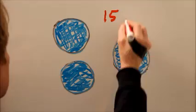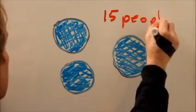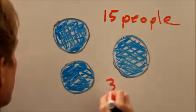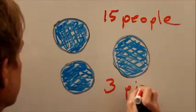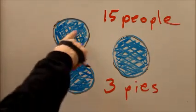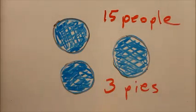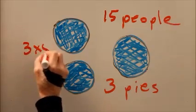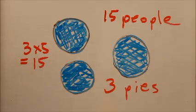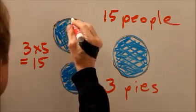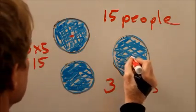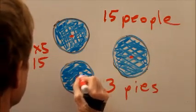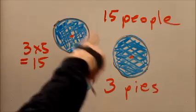people, we got three pies. If we cut each pie up into five identical pieces, then we're going to have a total of 3 times 5 equals 15 pieces. So we have to cut each pie up into fifths.